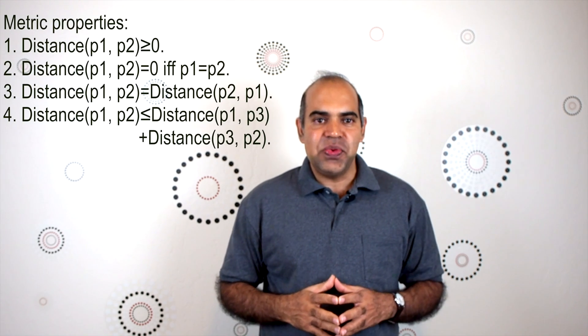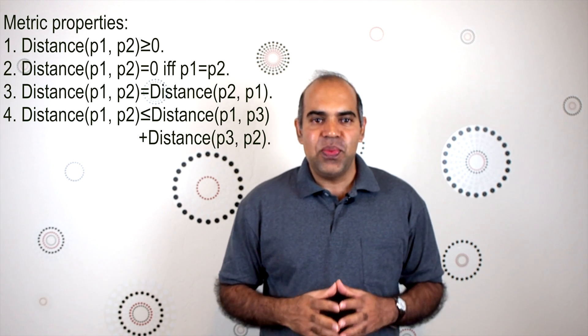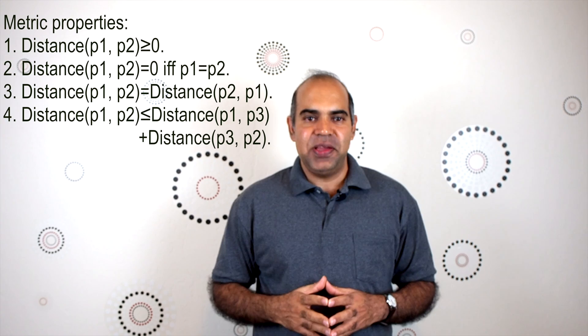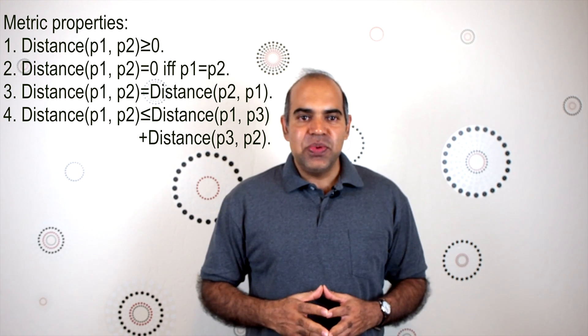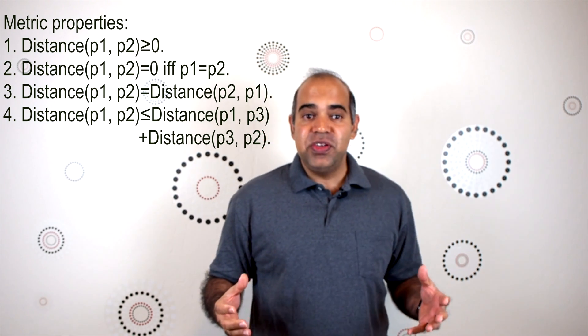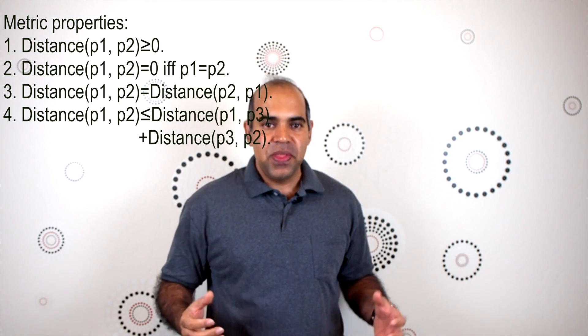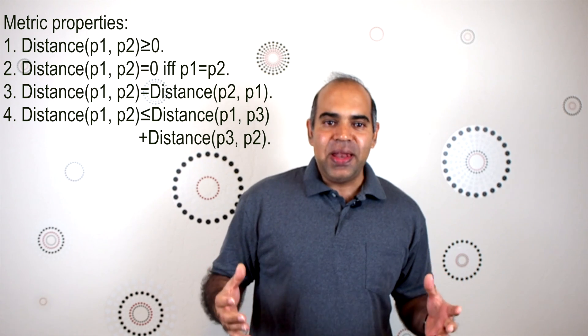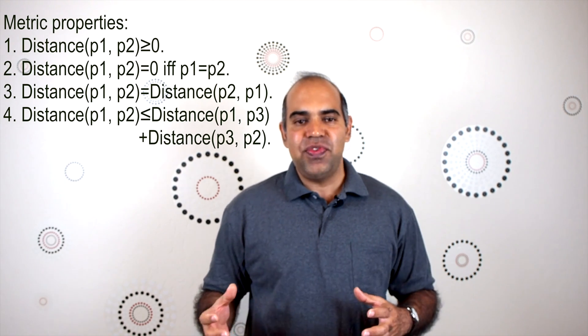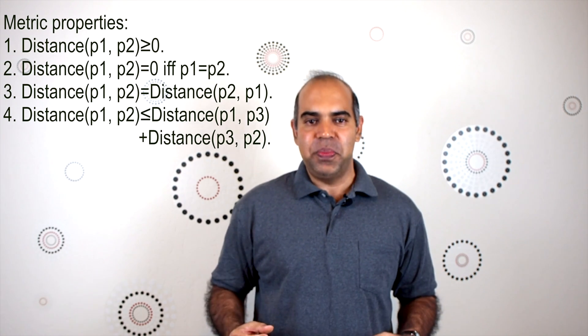In this lesson, we will talk about Euclidean and Manhattan distances between two data points. In the previous lesson, we discussed four axioms that every distance formula must satisfy. Those four axioms are sometimes referred to as metric properties or distance properties. Euclidean and Manhattan distances satisfy all those metric properties.